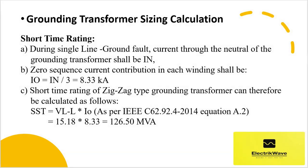Let's calculate the short time rating. (a) During a single line-to-ground fault, current through the neutral of the grounding transformer shall be In. (b) Zero sequence current contribution in each winding shall be I0 = In/3 = 8.33 kilo-amperes. (c) The short time rating of the zigzag type grounding transformer can therefore be calculated as follows.